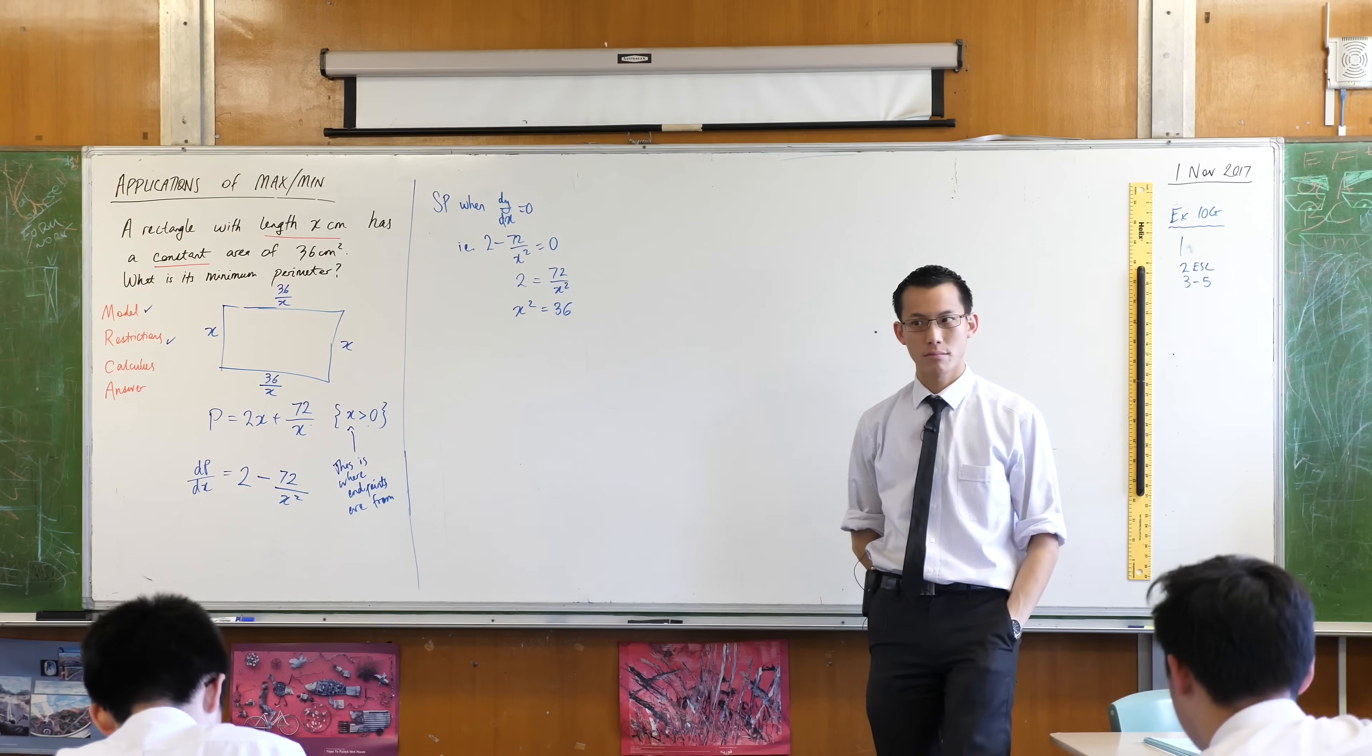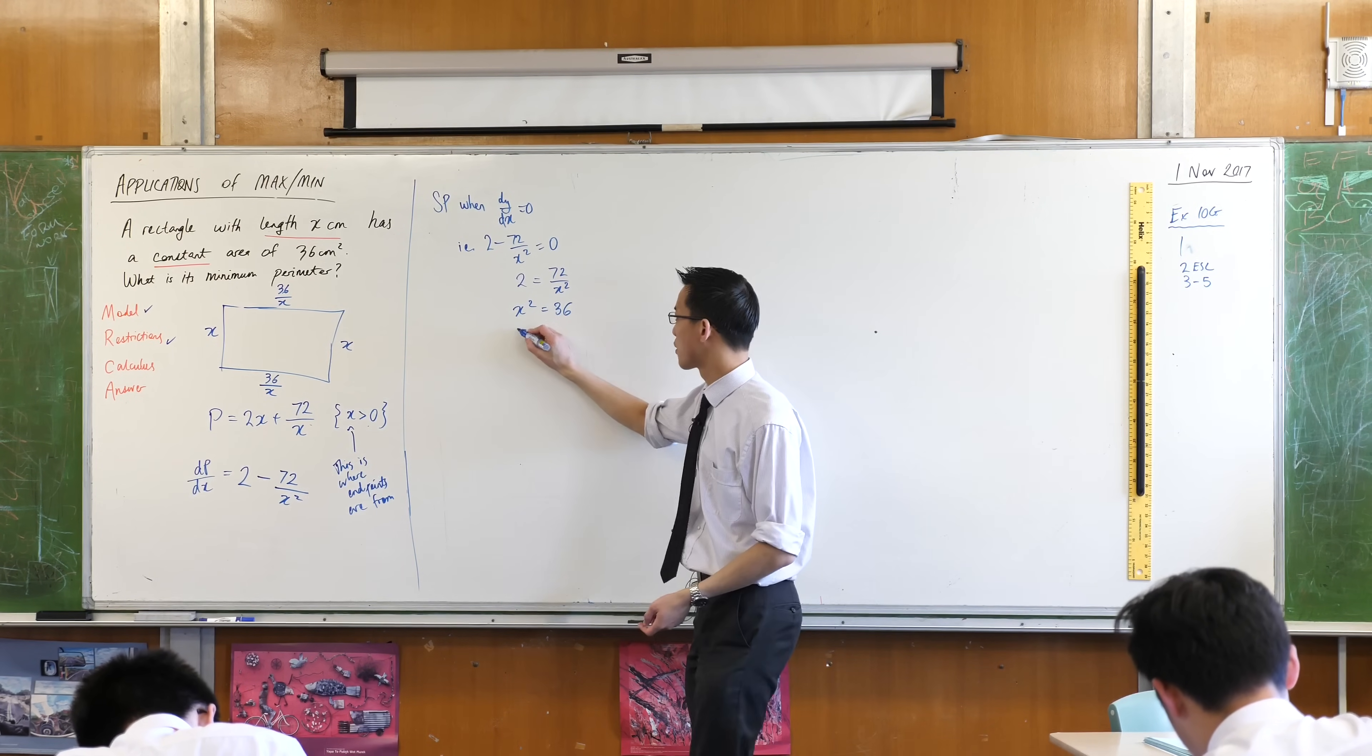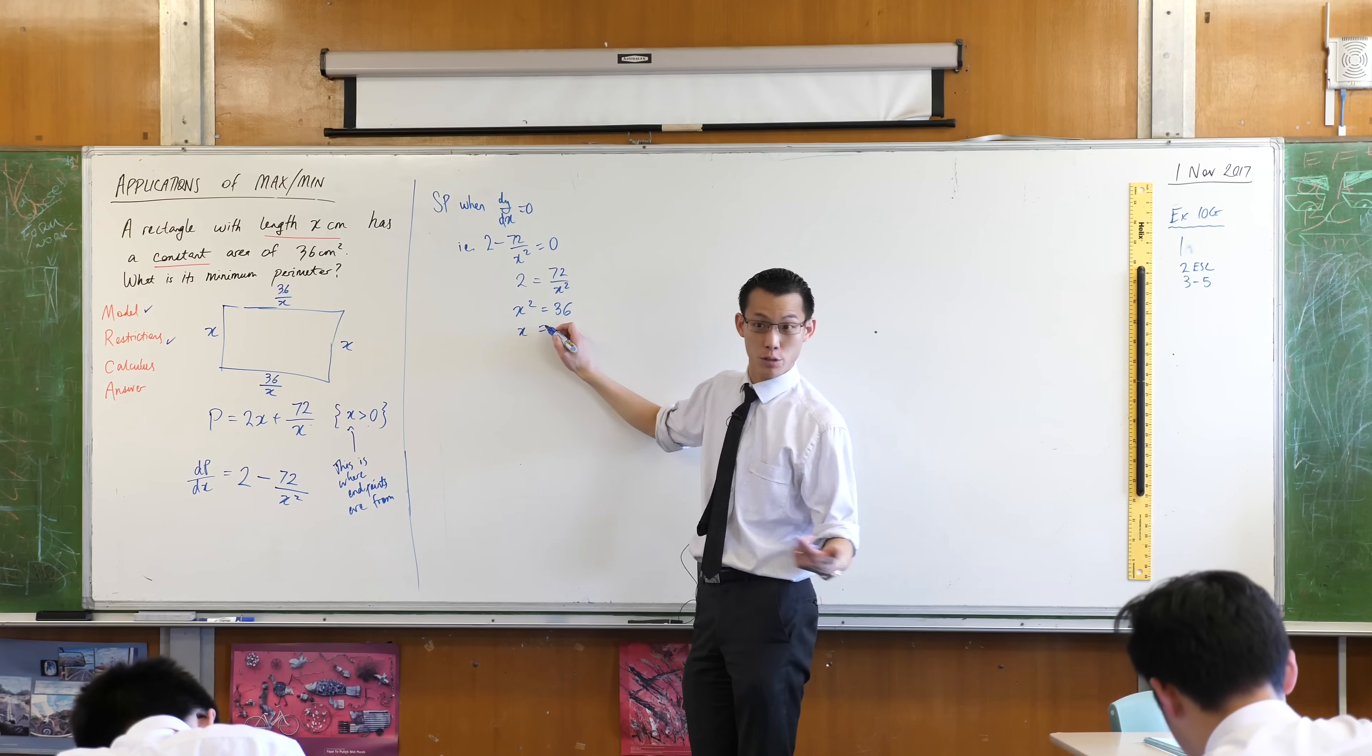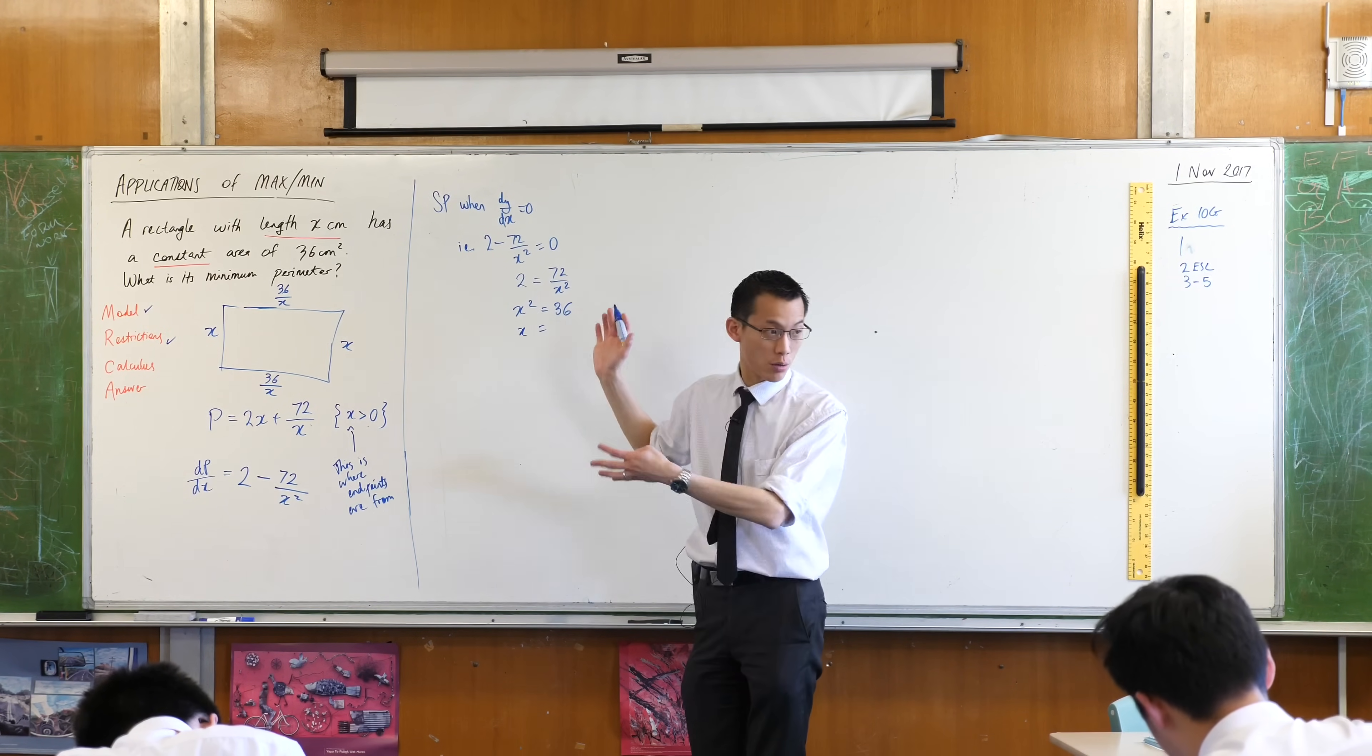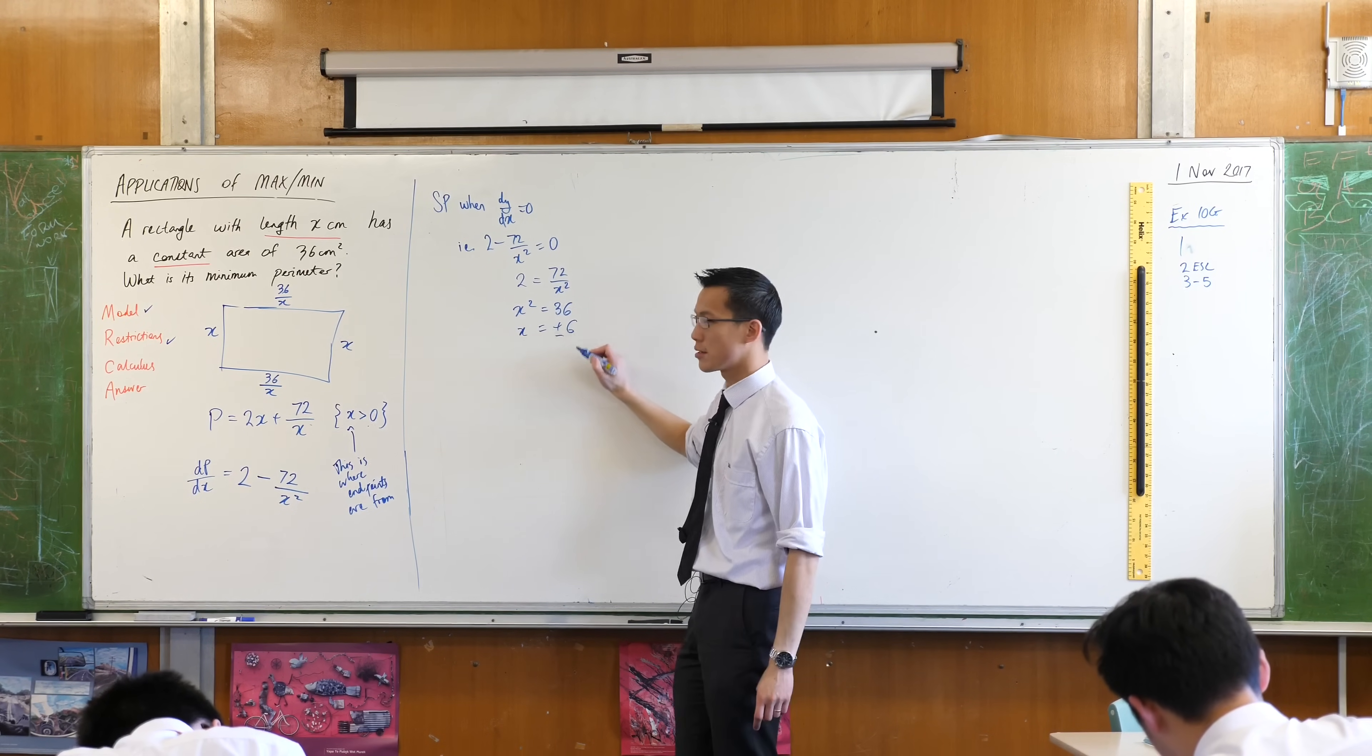I'll take the square root of both sides but of course while I do that, I know that there are two square roots, two values that could satisfy this, right? Once I take the square root. Plus or minus 6, okay?